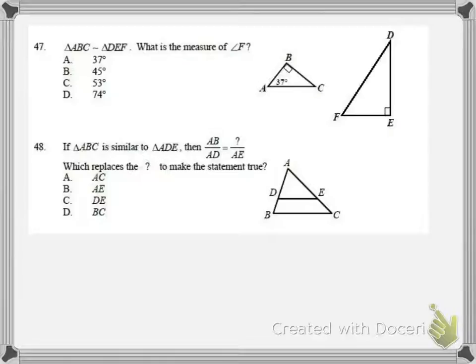Starting with number 47, we have two triangles that are similar. We have to find the measure of angle F. What we're doing here is trying to match up corresponding parts. Looking at triangle ABC, I know that B is 90, A is 37.